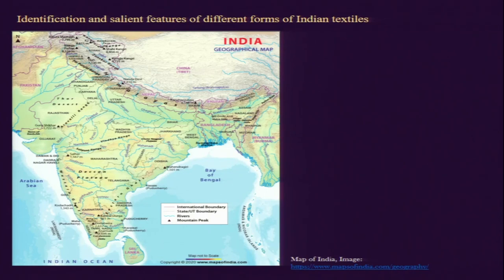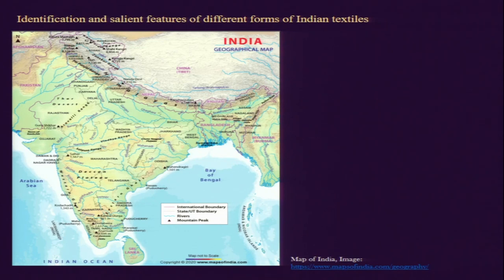We now come to the identification and design features of different forms of Indian textiles. We will try to understand this from the geographical point of view but also from the point of view of climatic conditions. The map on screen depicts India as a post-1947 nation state, and we can see the geographical borders that separate India from other South Asian countries such as Bangladesh, Nepal, Pakistan, and Bhutan.